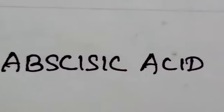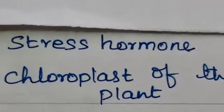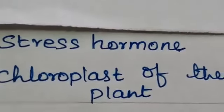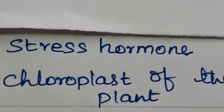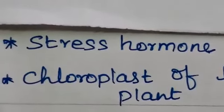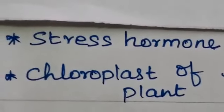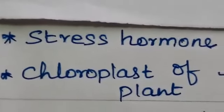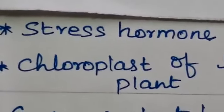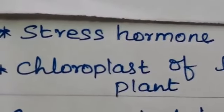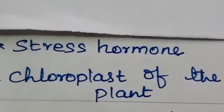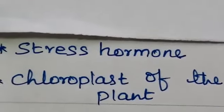Abscisic acid is a growth inhibitor which regulates abscission and dormancy. It increases the tolerance of plants to various kinds of stress, so abscisic acid is called the stress hormone. It is found in the chloroplasts of plants.